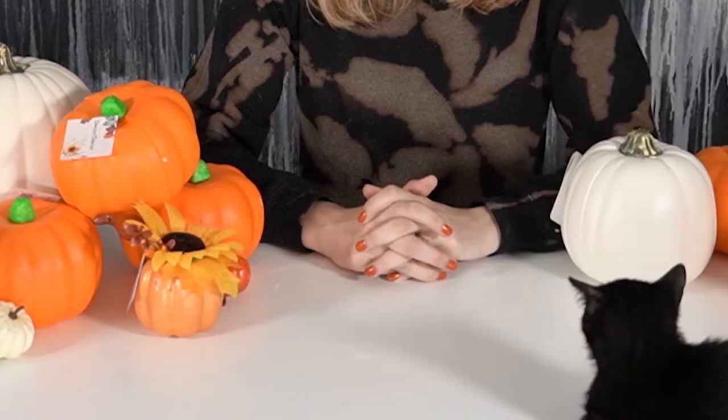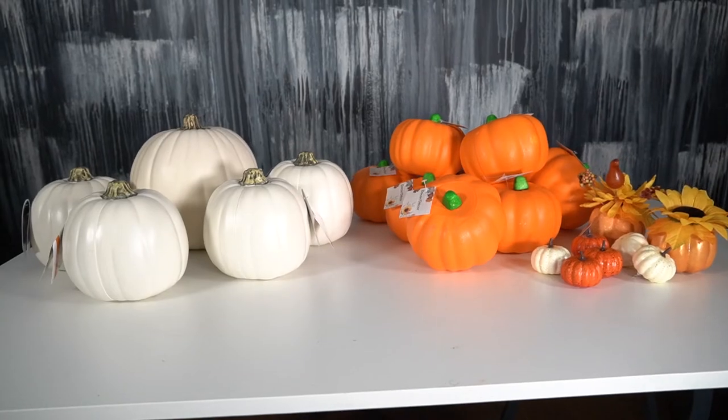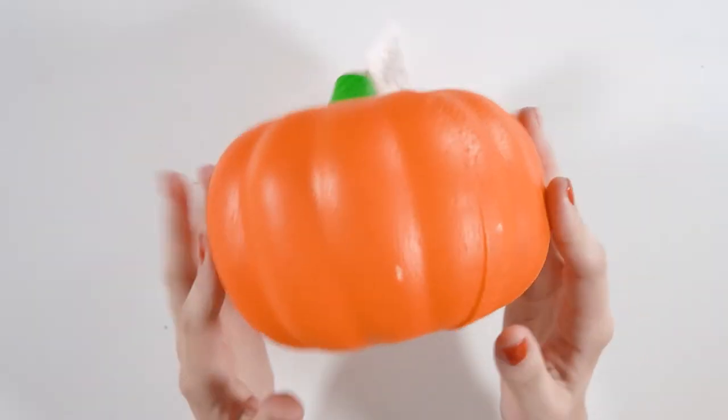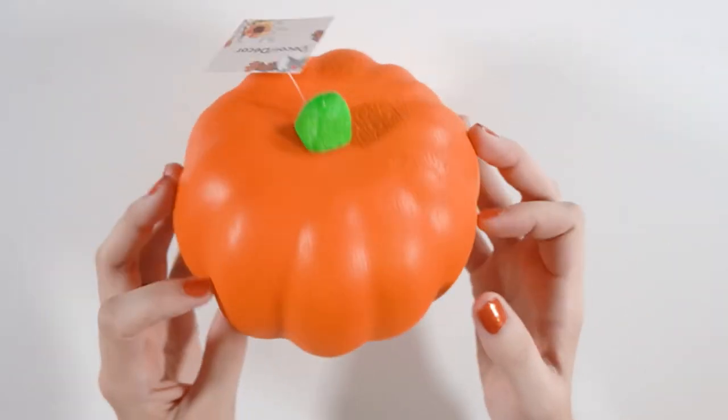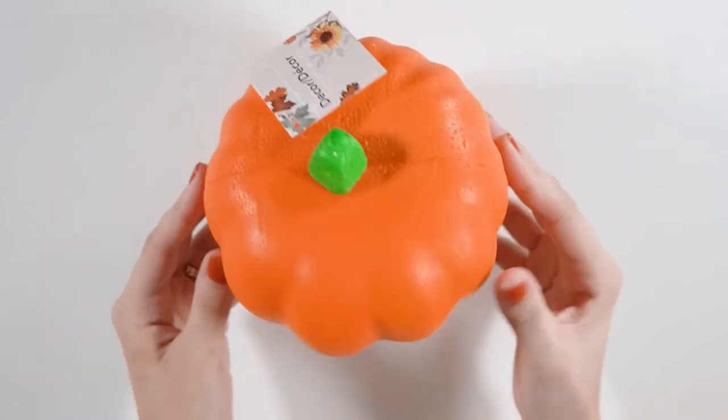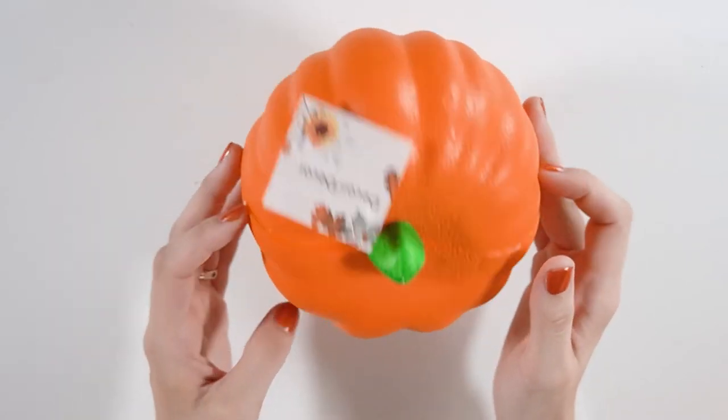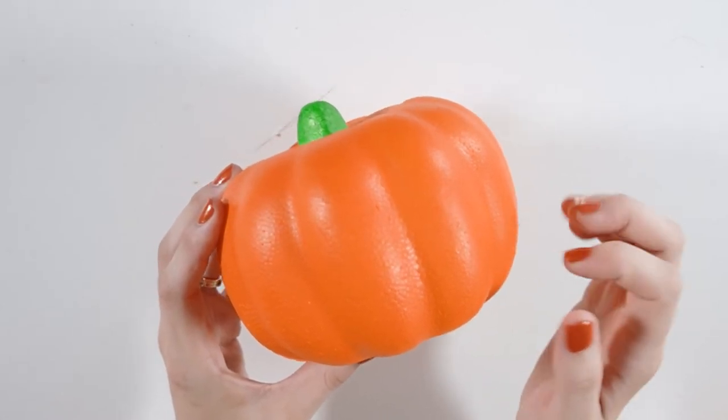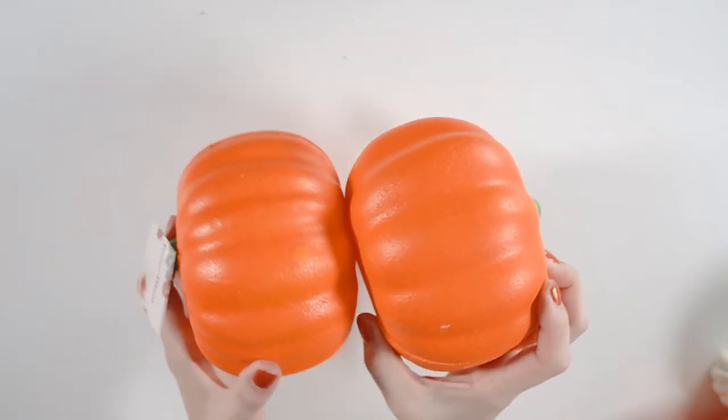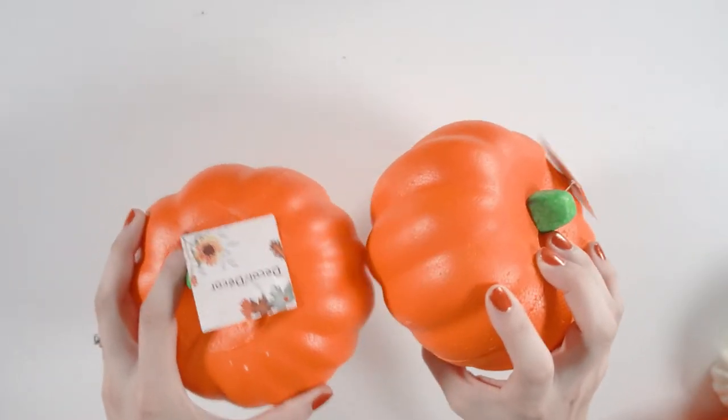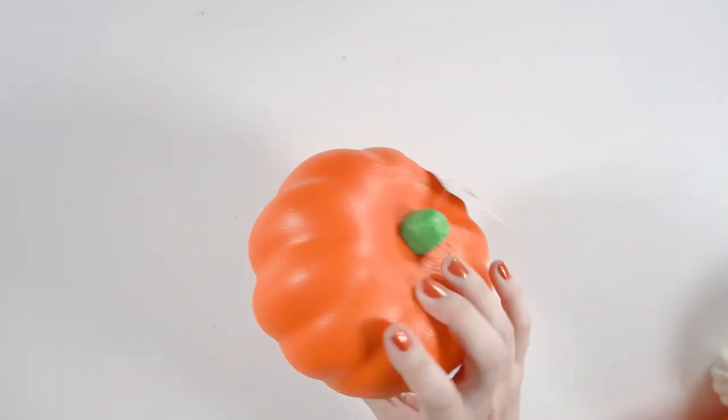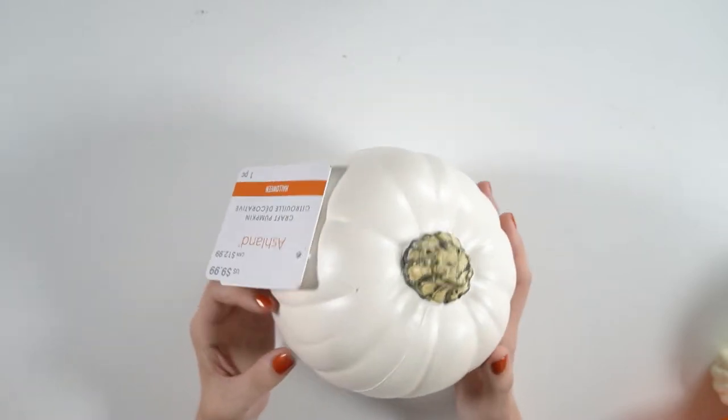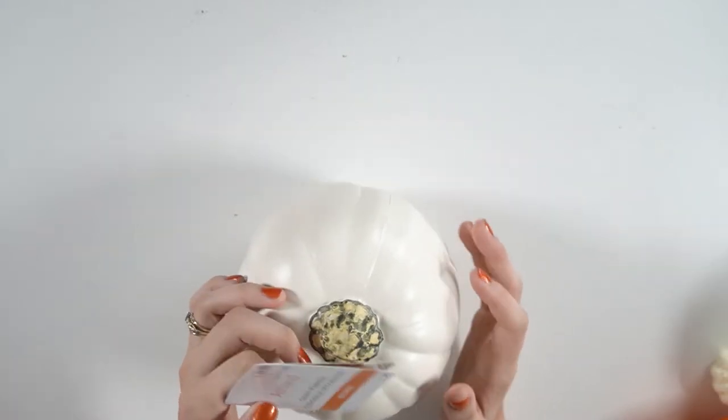Let's begin. As you saw in the intro by all the pumpkins surrounding me, I went out and bought a crap ton of pumpkins. Some of the pumpkins look like this. They're cheap, they're from the dollar store, and they're made of styrofoam, so we can't expect much when you're only paying a dollar for something. And I'm not exactly sure what I was trying to show here by rubbing the two pumpkins together.